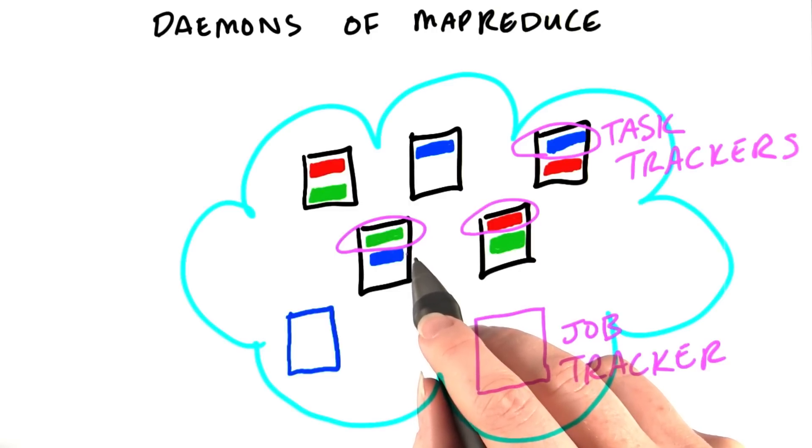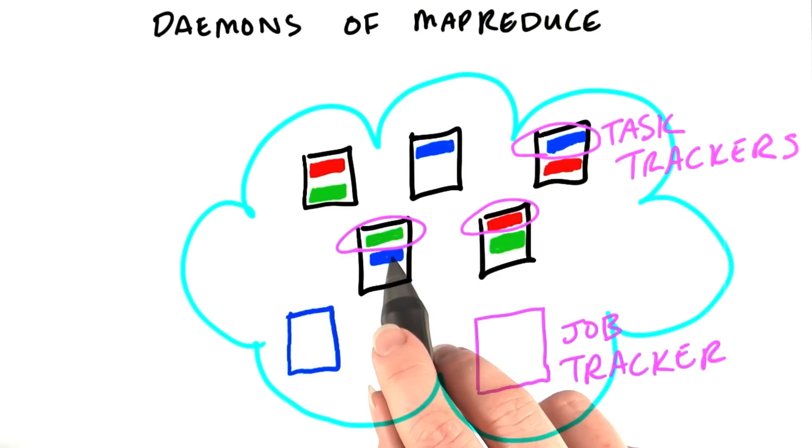It will try to make sure that a mapper works on data on the same machine. If this green block, for example, needs processing, then the task tracker on this machine will likely be the one chosen to process that block.